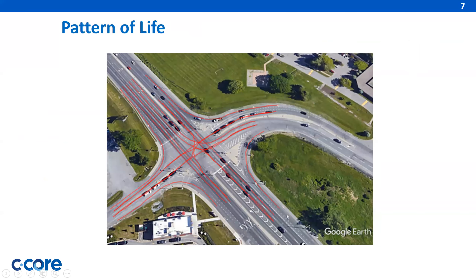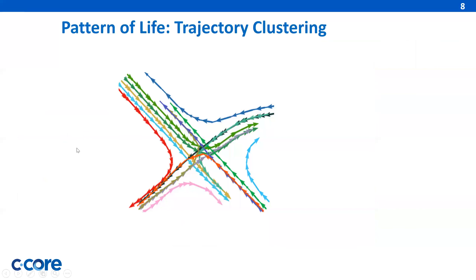The objective of anomaly detection is to identify patterns in data that do not conform to a well-defined normal pattern of life. Here you can see the simulated trajectories, representing one pattern with up to 15 normal paths. In total, 225 trajectories were simulated to examine the trajectories for trajectory clustering.